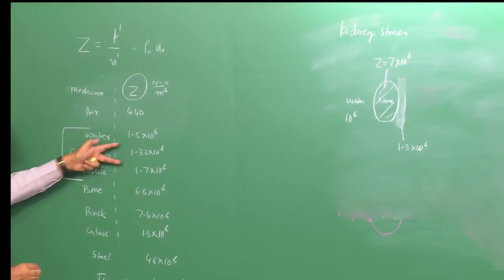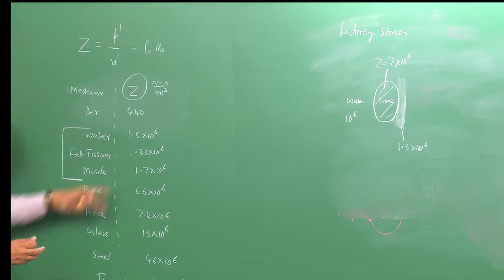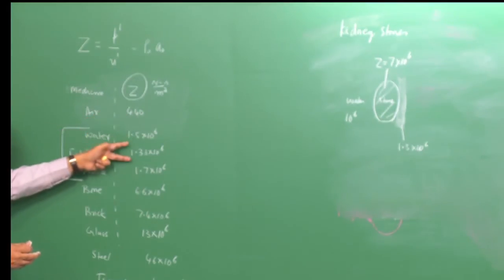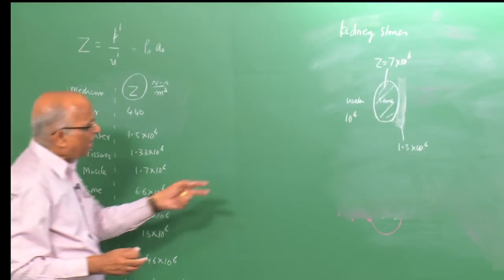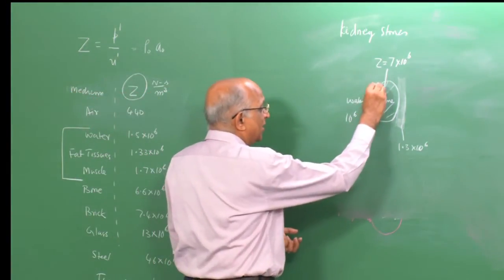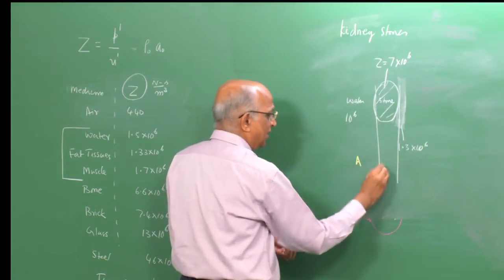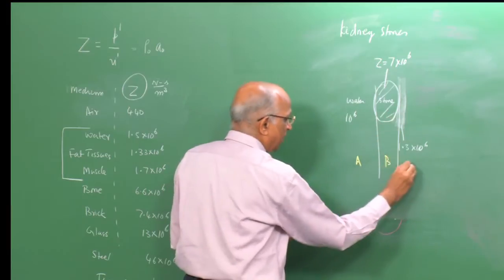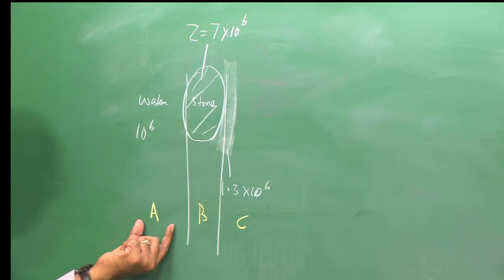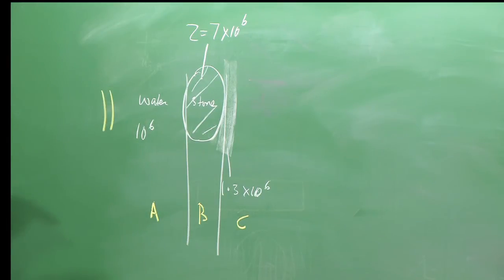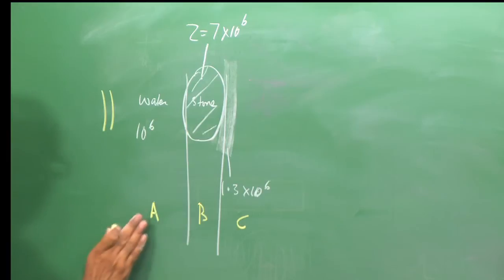Water, fat tissues, and muscle all have similar impedances around 1.2 to 1.7 × 10⁶ N·s/m³, while bone is higher. Air is much lower than all of these. If I direct a focused shock wave into the body onto the stone, what is going to happen?